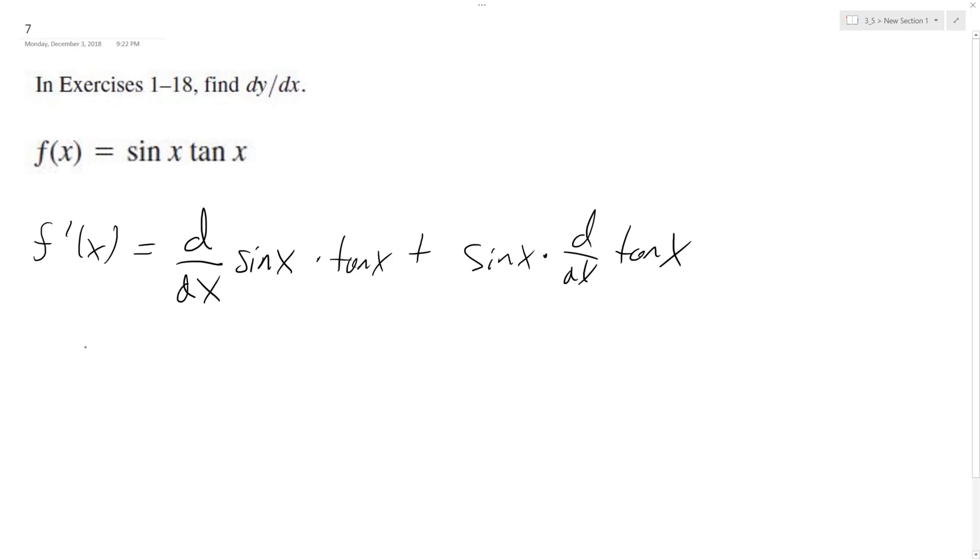So the derivative of sine of x is cosine of x times sine of x.